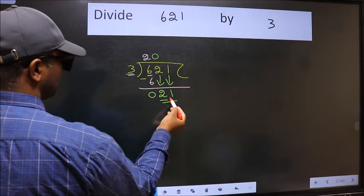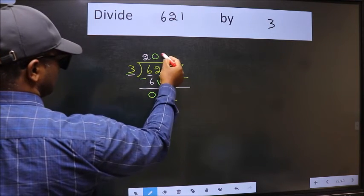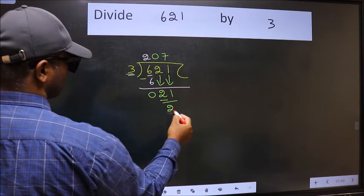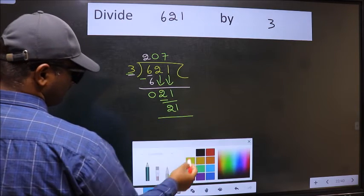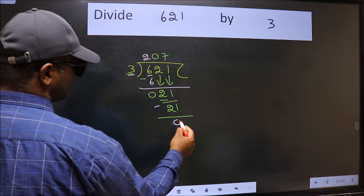Now 21. When do we get 21 in the 3 table? 3 sevens 21. Now we should subtract. We get 0.